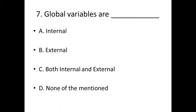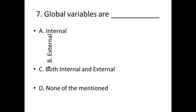Seventh bit. Global variables are blank. Option A: internal. Option B: external. Option C: both internal and external. Option D: none of the mentioned. Answer: Option B, external.